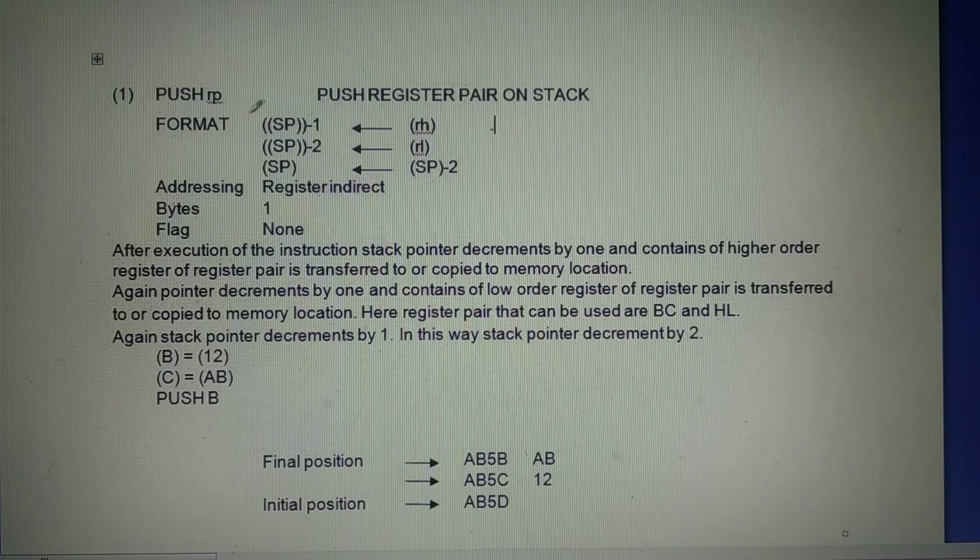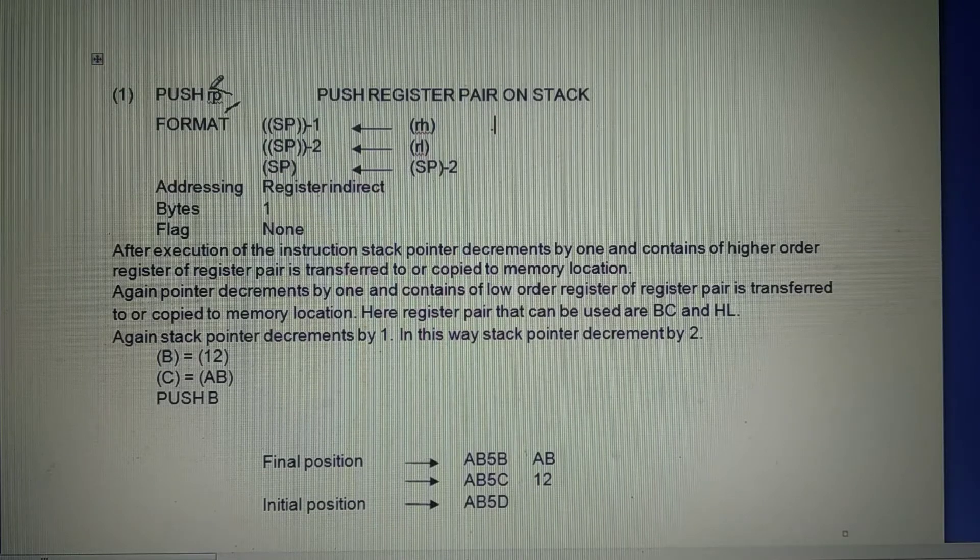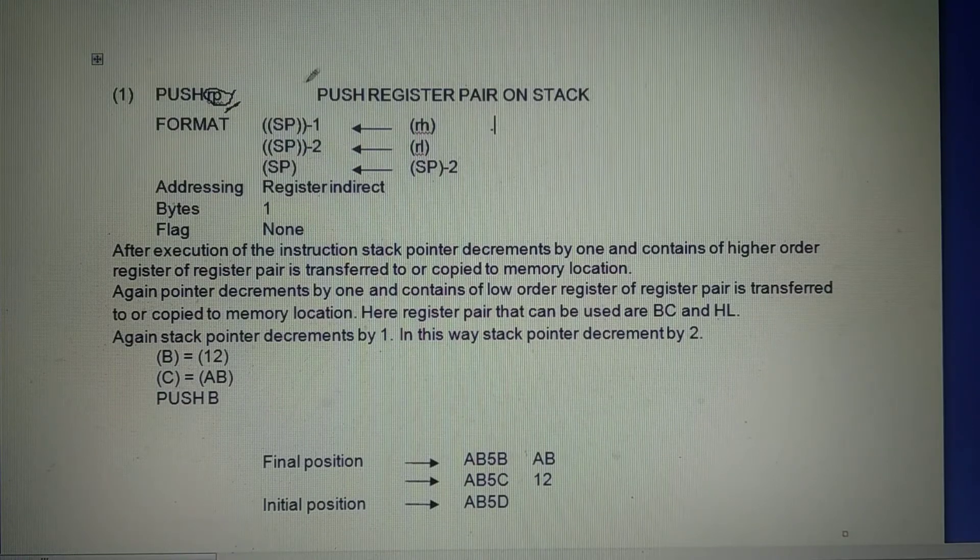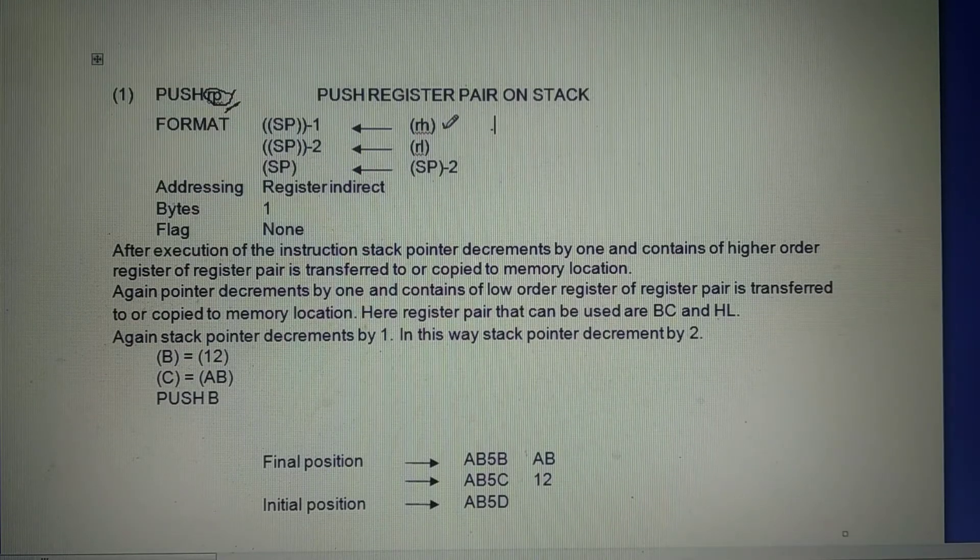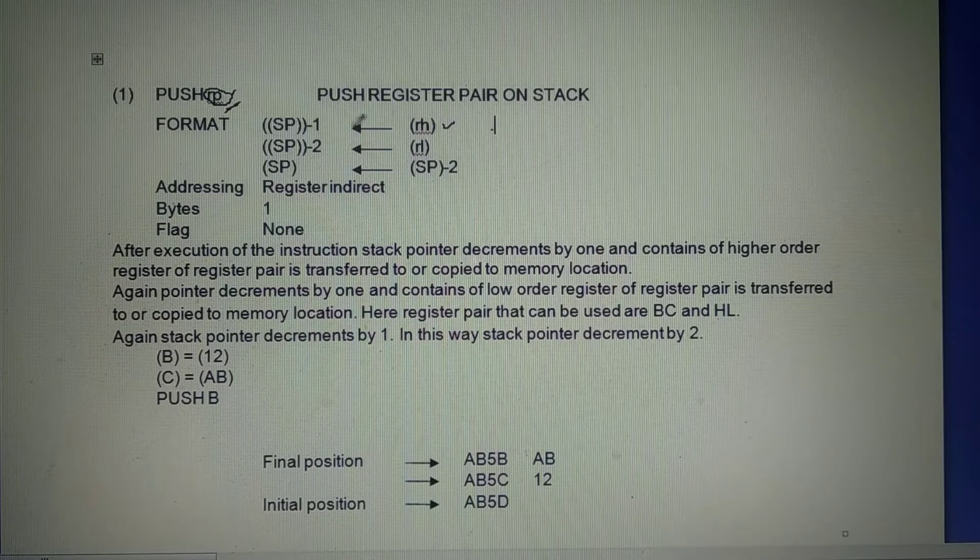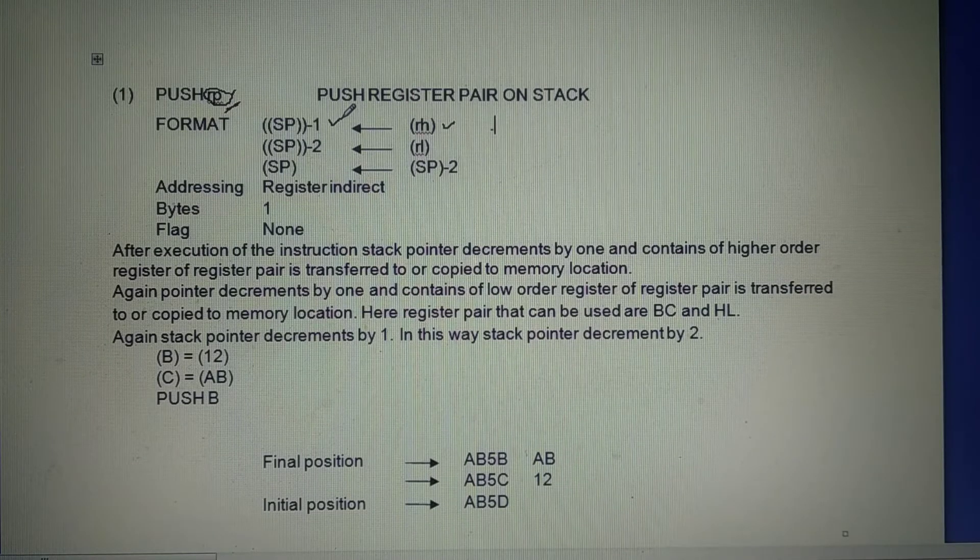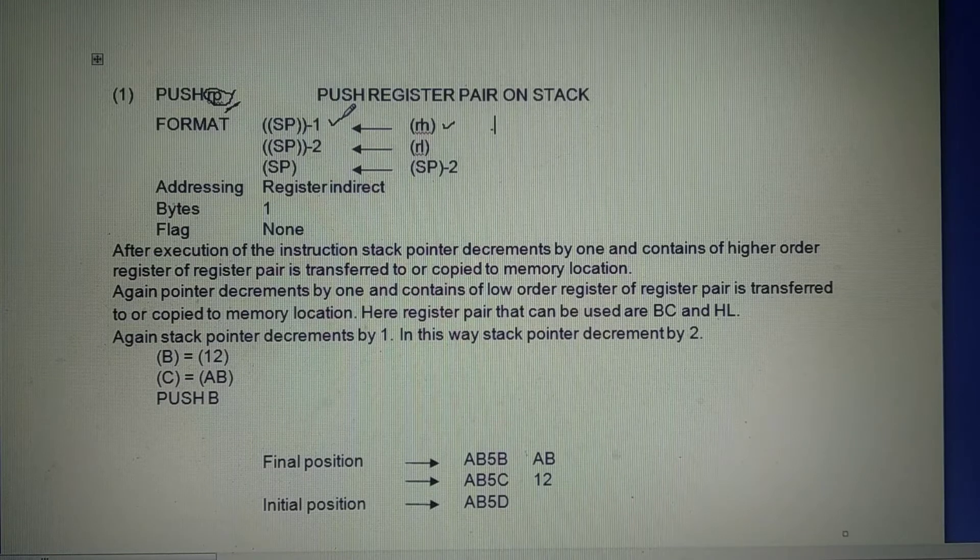The first instruction from machine control is Push-RP. RP stands for Register Pair. The meaning is Push register pair on stack. The format is given. The high-order register of register pair is stored one less than the stack pointer. It is stored in memory location which is indicated by stack but one less than stack pointer.